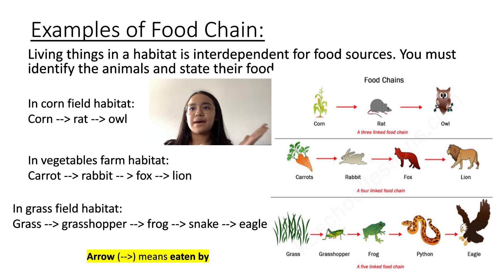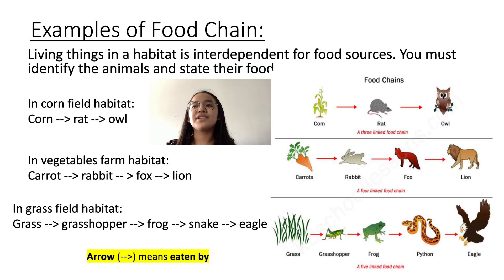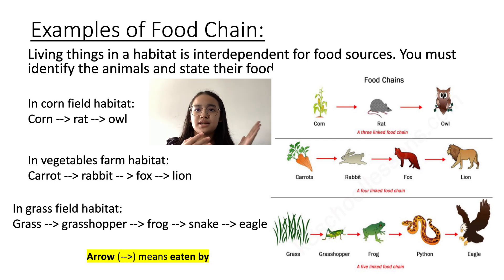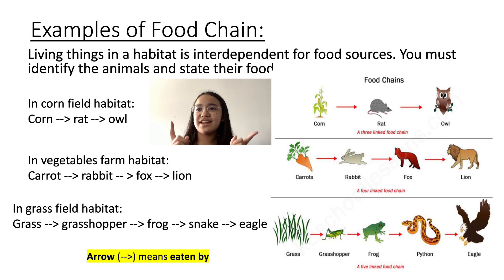In a Cornfield Habitat, the Food Chain is corn eaten by rat, rat eaten by owl. In the Vegetable Farm Habitat, it is carrot eaten by rabbit, rabbit eaten by fox, and fox eaten by lion. And in the Grass Field Habitat, it is grass eaten by grasshopper, grasshopper eaten by frog, frog eaten by snake, and snake eaten by eagle. Remember, the arrow means 'eaten by.'